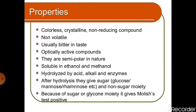What are the different properties of glycosides? Glycosides are colorless, crystalline, non-reducing compounds. They are non-volatile in nature. Usually they have a bitter taste. They are optically active compounds. They are semi-polar in nature. They are soluble in ethanol and methanol. Glycosides are hydrolyzed by acid, alkali and enzymes. After hydrolysis, glycosides give a sugar part — for example, glucose, mannose, rhamnose — and a non-sugar part — for example, alcohol and alkali. Because of the sugar or glycone moiety, they give a Molisch's test positive result.